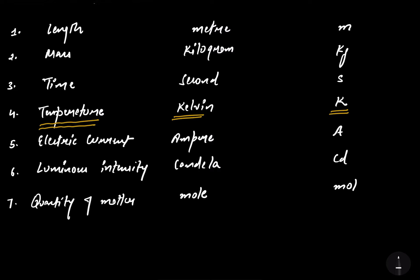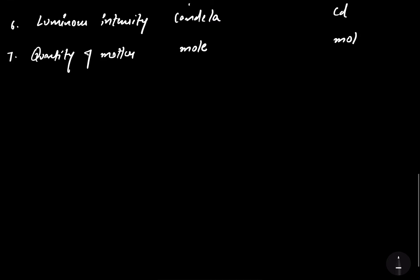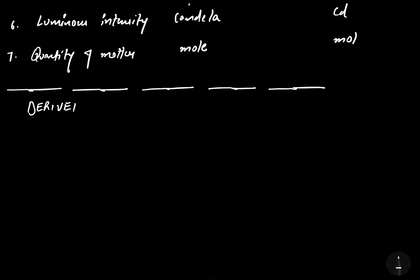Now the next topic is derived units. What are derived units? The units derived from SI basic units are called derived units. These units are for physical quantities such as area, volume, density, etc.